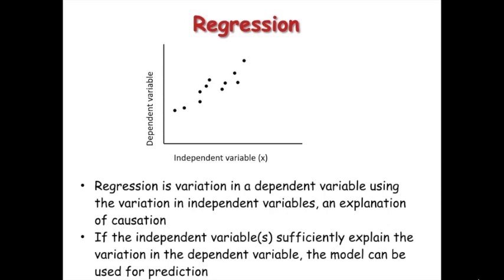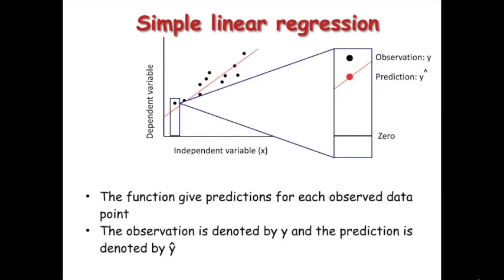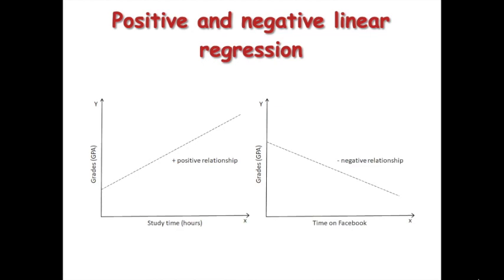The best fit line is the one for which total prediction error is as small as possible. Error is the distance between a point and the regression line. Simple linear regression is a regression model that estimates the relationship between one independent variable and one dependent variable using a straight line; both variables should be quantitative. Simple linear regression is a statistical method that allows us to summarize and study relationships between two continuous variables. One variable is regarded as the predictor, explanatory, or independent variable; the other variable, denoted y, is regarded as the response, outcome, or dependent variable.